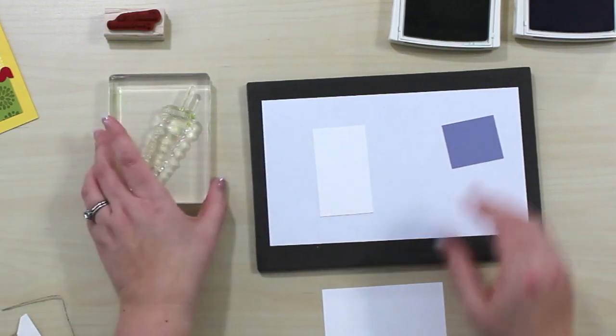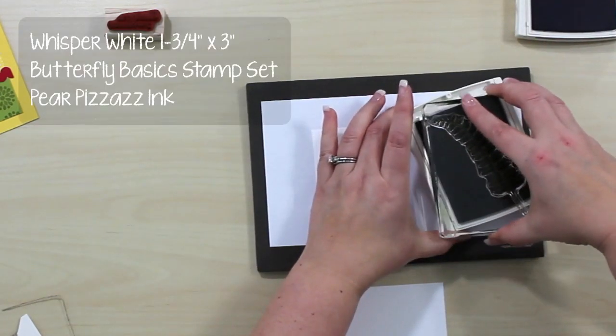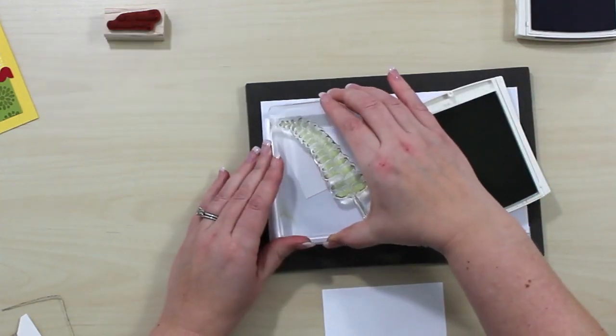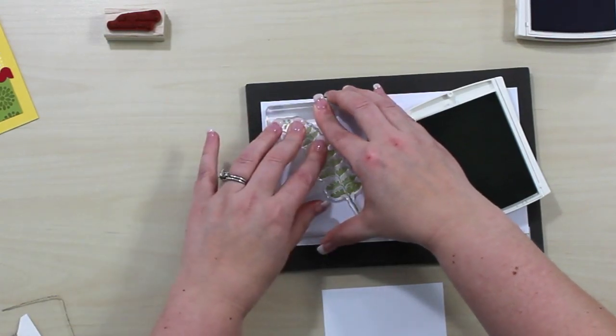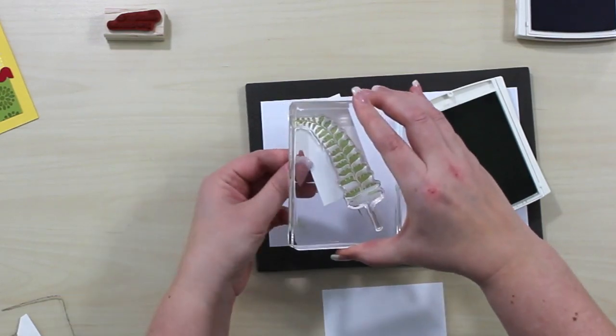I'm going to start with a piece of Whisper White cardstock. I'm going to be using the Butterfly Basic stamp set and I'm going to start by stamping with some Pear Pizzazz ink onto this Whisper White. I'm going to stamp this. I don't care about the bottom part of it being on the white cardstock but I definitely want the top being on there.